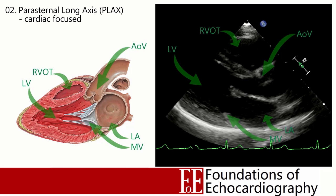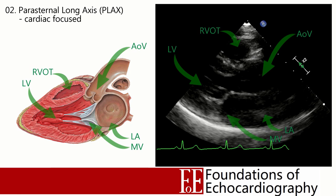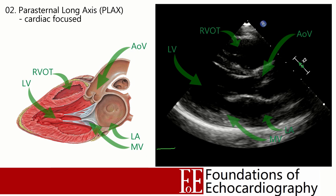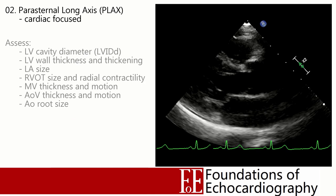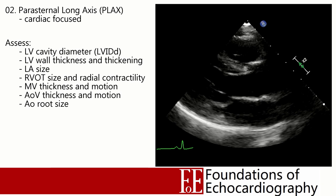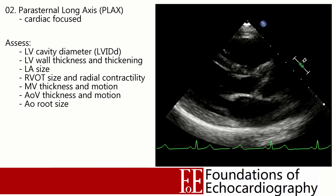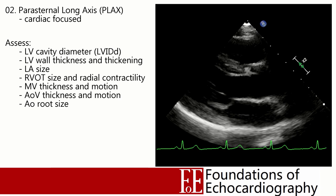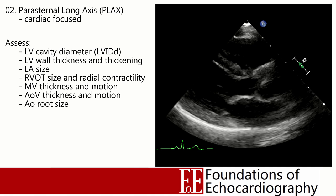In the parasternal long axis cardiac-focused view, we have the left atrium in the bottom right-hand corner, which opens through the mitral valve into the left ventricle. Sitting directly anterior to the mitral valve is the aortic valve, opening into the aortic root and proximal aorta. The most anterior cardiac structure visible is the right ventricular outflow tract. We need to assess the LV cavity size — specifically the internal diameter at end diastole — look at LV wall thickening during systole, inspect the aortic and mitral valves for leaflet thickness, adequate opening, and whether they close and meet in the middle without prolapsing back.